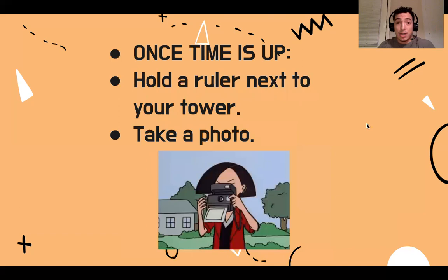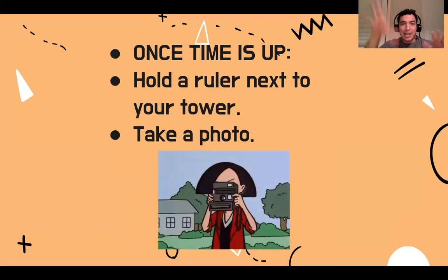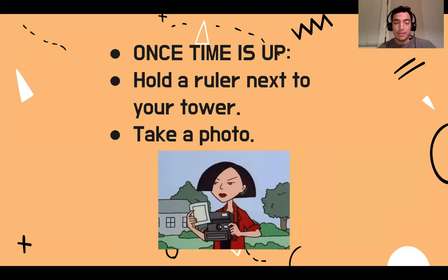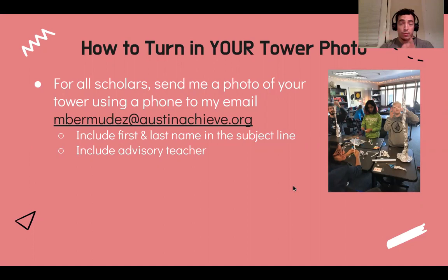Now, if it does stand — good job! So once time is up, hold your ruler if you have one, place it next to your tower, just so I can get an idea how tall it is. Then have your teacher, a friend in your class, or a sibling take a photo of the ruler next to the tower. Again, if you don't have a ruler, don't freak out — I really just need the photo of the tower itself. It's going to look a little something like this: you see it kind of standing up and nobody's holding it. This is for all scholars, whether you're on campus or at home. Send me a photo of your tower, just like last time you sent me a design — this time I want the actual photo of the tower sent to my email. Make sure you include your first name, your last name, and your advisory teacher — whether it's Ms. Torres, Mr. Zeely, Ms. Redix, or Ms. Janice. Just let me know who your advisory teacher is.